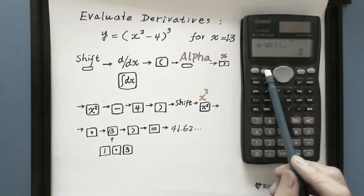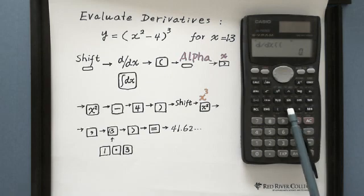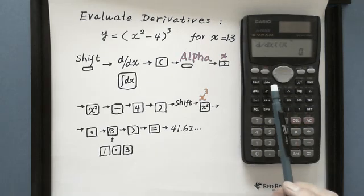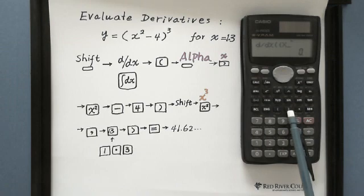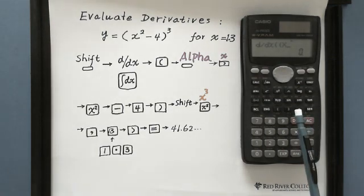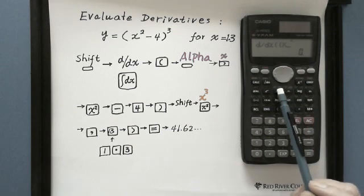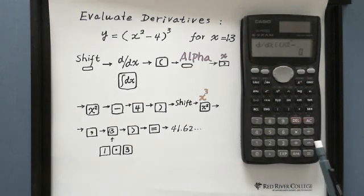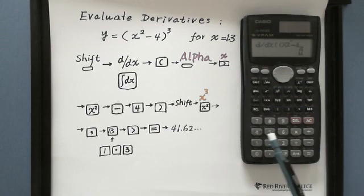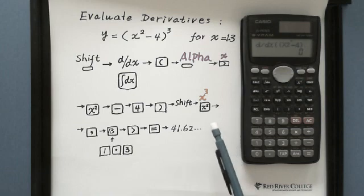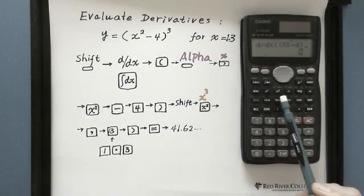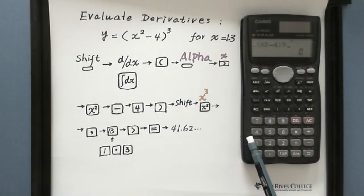Then go to alpha x, using the red button x here, and then we go to square minus 4 and we go to cube. We use shift this one with x cubed.